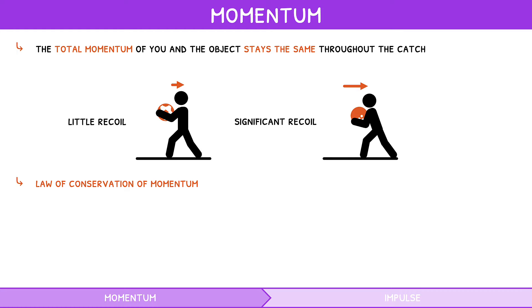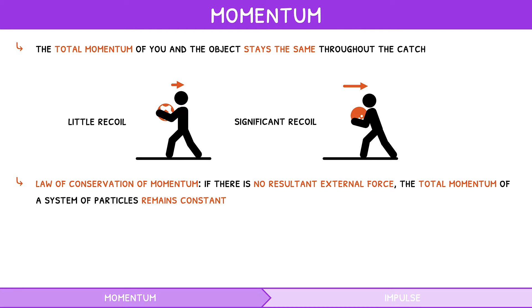This is termed the law of conservation of momentum, defined as: if there is no resultant external force, the total momentum of a system of particles remains constant. Mathematically, total momentum before an event equals total momentum after an event. Typically two masses are involved, so the formula is: mass 1 times initial velocity 1, plus mass 2 times initial velocity 2, equals mass 1 times final velocity 1, plus mass 2 times final velocity 2.